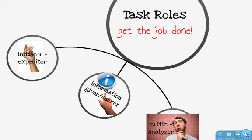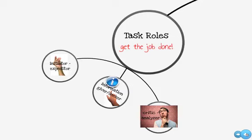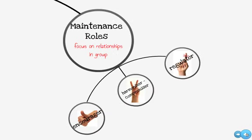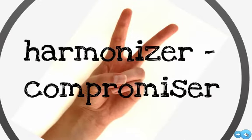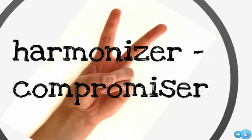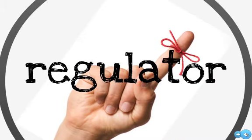Just as there are three main task roles, there are also three main maintenance roles in groups, each focusing on the emotional tone and relationships within the group in different ways. The first is the encourager, who praises and comments on contributions and achievements of the group, finding it important to maintain a positive environment. The second is the harmonizer or compromiser, who helps resolve conflict, settle arguments, and arrive at compromises. The third is the regulator, who reminds participants of the agenda or topic at hand and gives others a chance to speak.